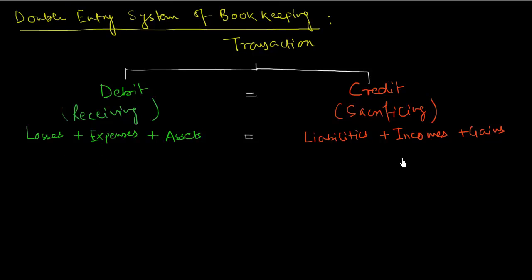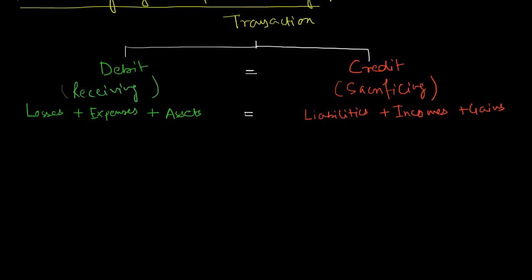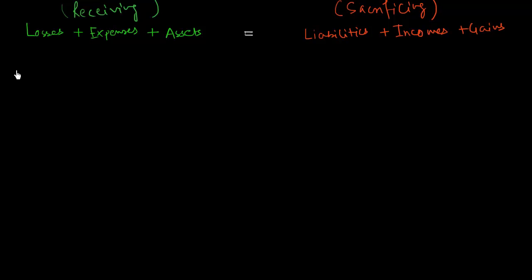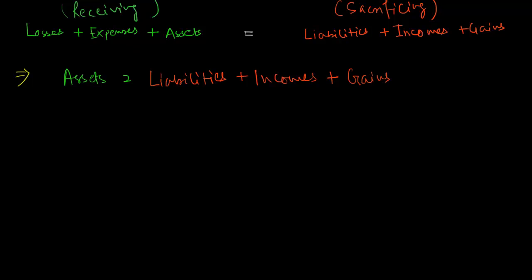Now let us move into this equation by arranging things using simple arithmetic. If we keep assets on the left-hand side, we have: Assets = Liabilities + Incomes + Gains − Losses − Expenses. When we carry losses and expenses from the left-hand side to the right-hand side, the positive values become negative.